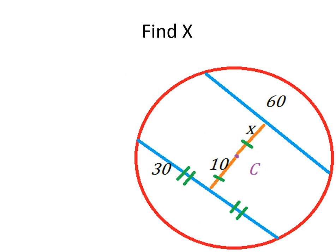If you look at this example — find x — hopefully you found x as 10. Because these chords are congruent: this chord would be 30 and 30, which makes 60, so this whole thing is 60. That means they must be equidistant from the center, and both distances would be 10. So x is 10.